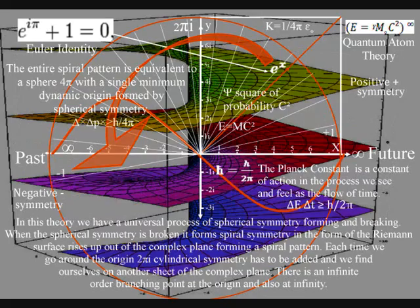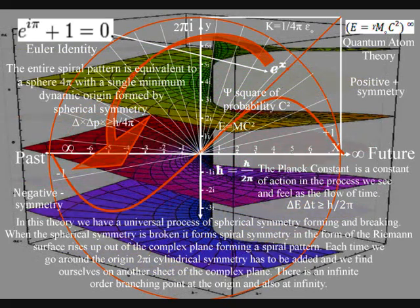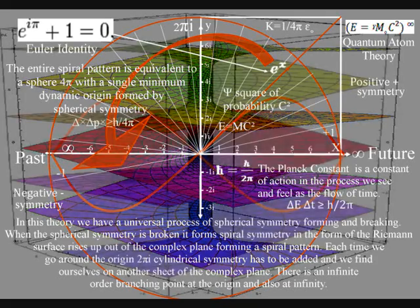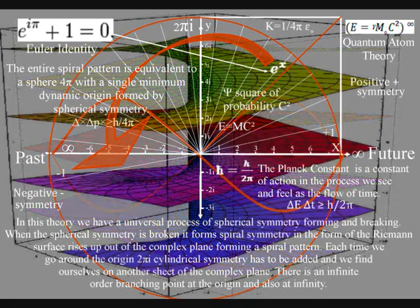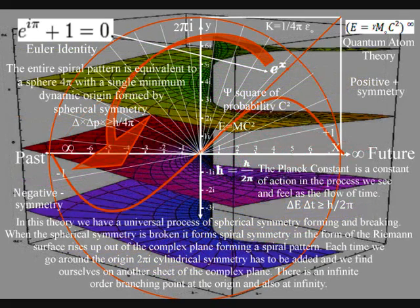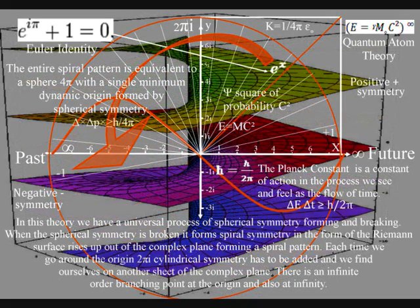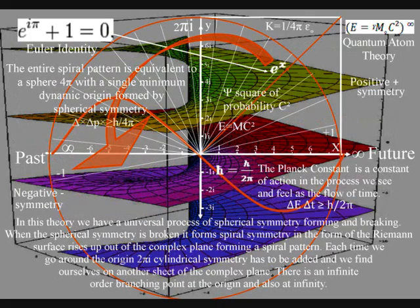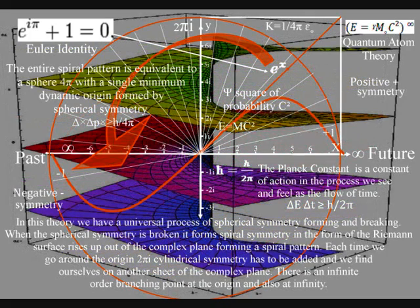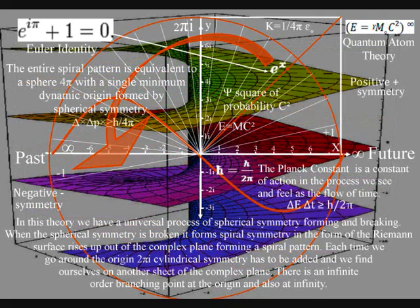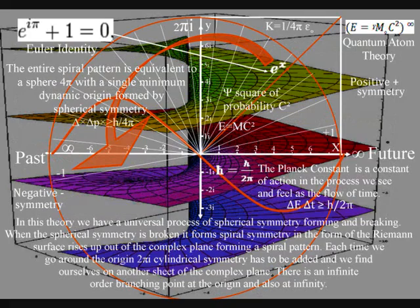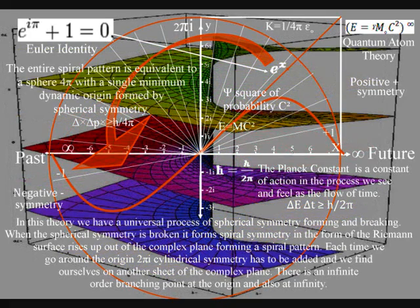There will always be uncertainty at the quantum level and in our everyday life, because the imaginary number i is the square root of minus one, representing the rotational symmetry that maintains the probability function at t equals zero — the moment of now. In this theory, human mathematics is based on the dynamic geometry of this theory, as can be seen in the way Euler's identity and imaginary numbers are part of it. At each rotation of the origin, 2π cylindrical symmetry has to be added, and we find ourselves on another sheet of the complex plane. This spiral symmetry forms line symmetry representing the timeline, or arrow of time.